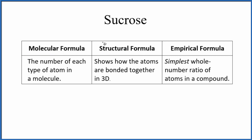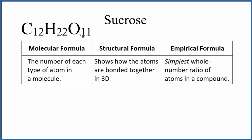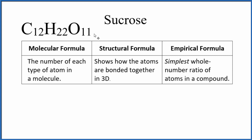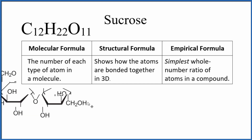Let's start with the molecular formula. That's the number of each type of atom we have in a molecule. So if we look at a molecule of sucrose, this is the molecular formula. We have 12 carbons, 22 hydrogens, and 11 oxygen atoms, and they're bonded together. We really can't tell how they're bonded together just looking at this. For that, we need a structural formula.